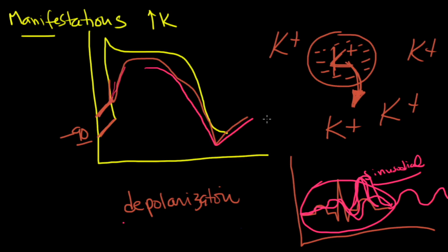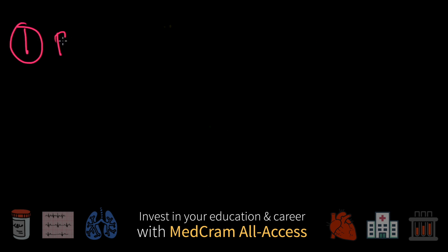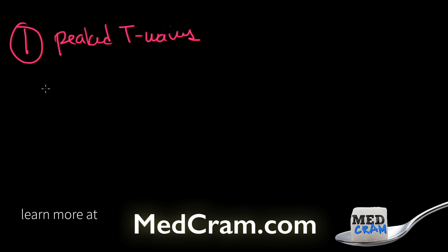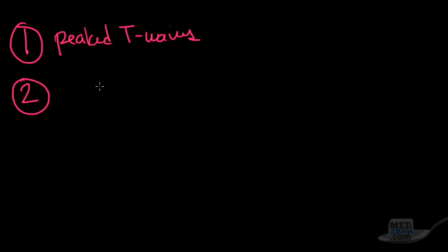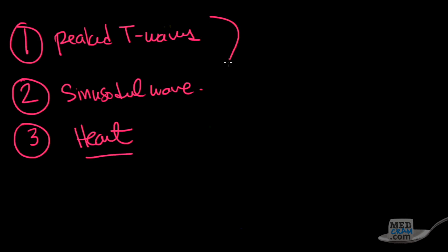So what should you know? What would they actually test you on a test about hyperkalemia? I think the thing that they would test you on is, number one, know that peaked T waves is the first sign that you'll see. Number two, if it eventually gets high enough, you'll get this sinusoidal wave. And number three, hyperkalemia in general is going to affect the heart. And all of this is an emergency.